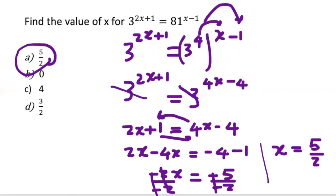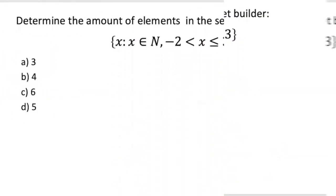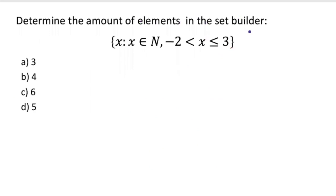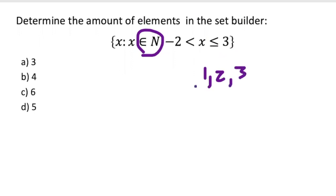The next example asks for the number of elements in the set where X is a natural number, X is greater than negative two and less than or equal to three. Natural numbers start at one, so we have one, two, and three — three is included because of the equal sign. That gives three elements, so the answer is A.